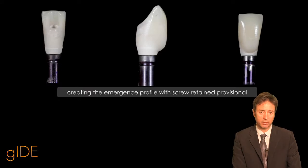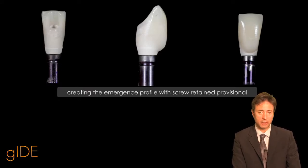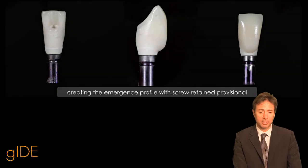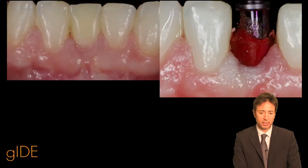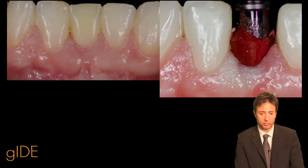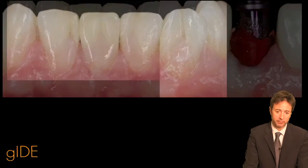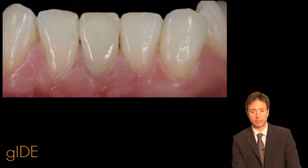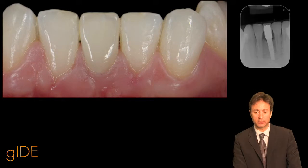The gold standard is still to use a screw-retained transmucosal restoration, as you can see here in this case. In every case we do it, we have to make a customized impression, as you can see here, and then proceed with the final restoration.